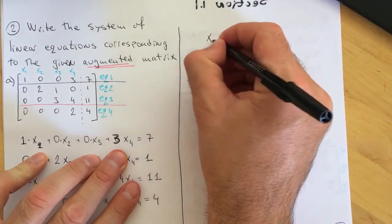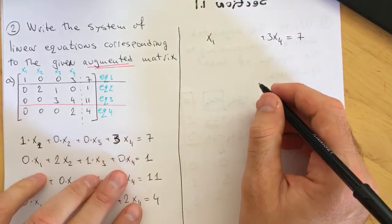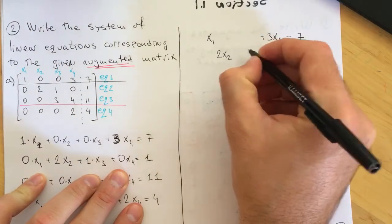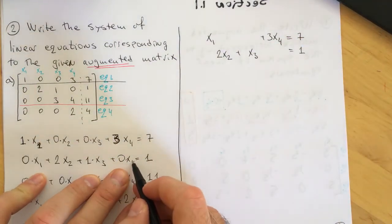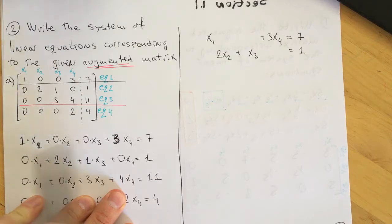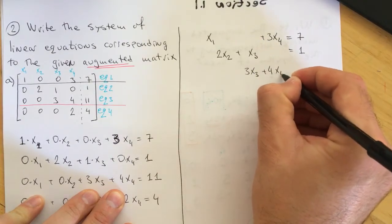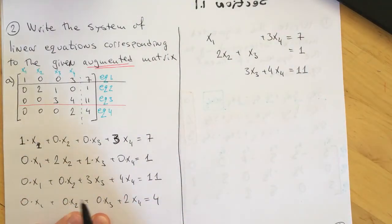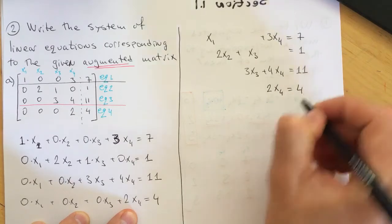What I expect you to write is: the first equation becomes x1 plus 3x4 equals 7. The second equation: x1 vanishes, so 2x2 plus x3 equals 1, because zero times x4 is zero. The third equation: zero times x1 and zero times x2 drop out, leaving 3x3 plus 4x4 equals 11. And finally, 2x4 equals 4.